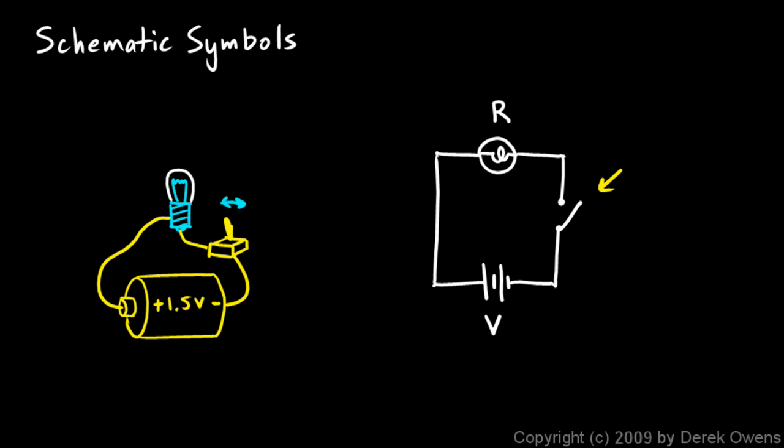And instead of a light bulb up here we might have just a resistor, and a resistor would look like this—a zigzag line—and that would just have electrical resistance. And it's not uncommon to have a resistor and a light bulb together, something like this.